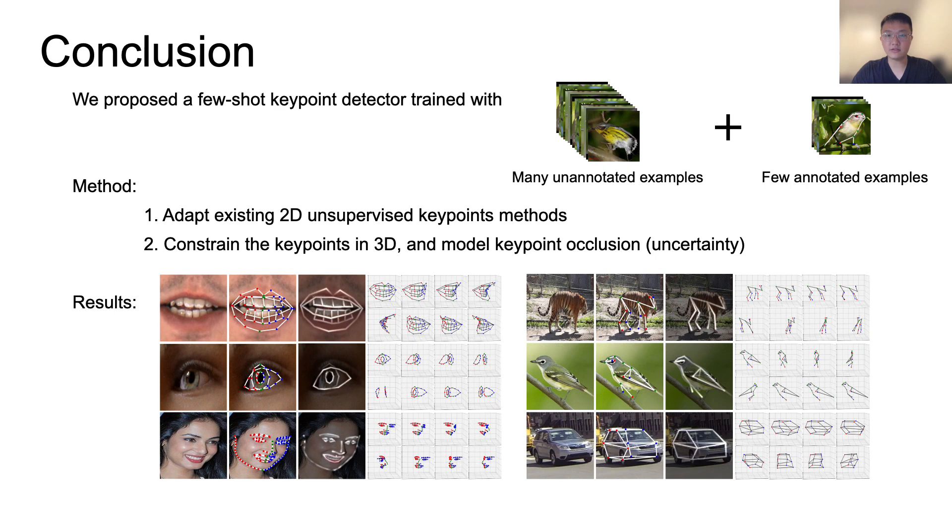Our model works on diverse datasets, including those with severe occlusion. It only needs 10 to 20 annotated examples. Although it may fail on highly articulated objects, only hundreds of annotations are needed to solve the problem. Thank you for your attention.